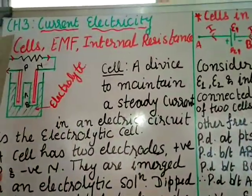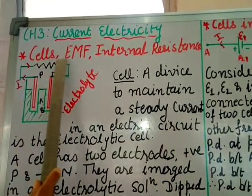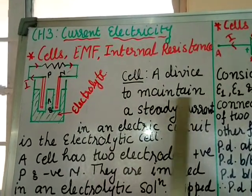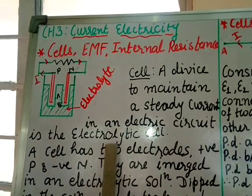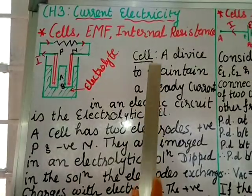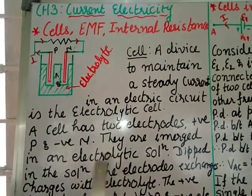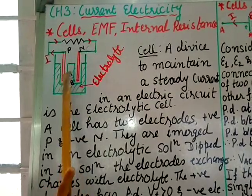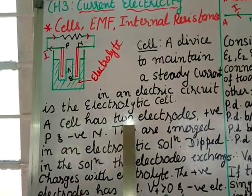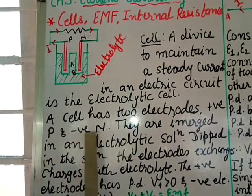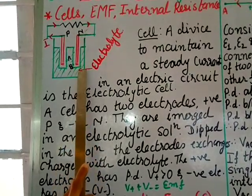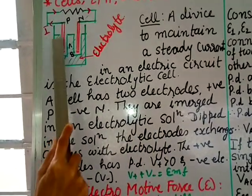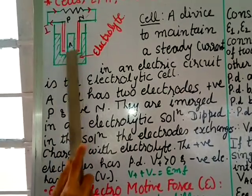Current electricity, Chapter 3 of physics, will continue today with cells, EMF, and internal resistance. First we define a cell: a cell is a device to maintain a steady current in an electric circuit — it is the electrolytic cell. A cell has two electrodes — electrode one and electrode two — positive and negative. They are immersed in an electrolytic solution.